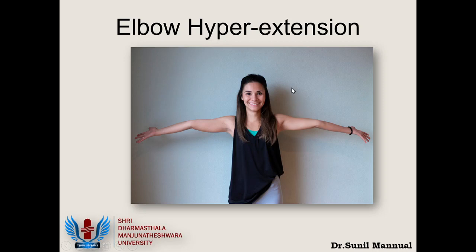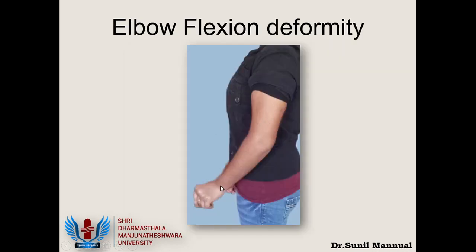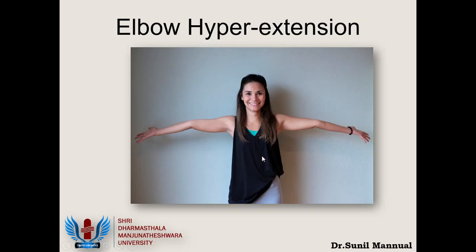So we have: one patient without full extension whom we called a flexion deformity patient, and another patient with normal extension who also has hyperextension — which can also occur in patients with joint laxity or ligament laxity. Now I am also checking for elbow flexion. The best place to assess elbow flexion is from the lateral side, and always compare both elbows simultaneously.